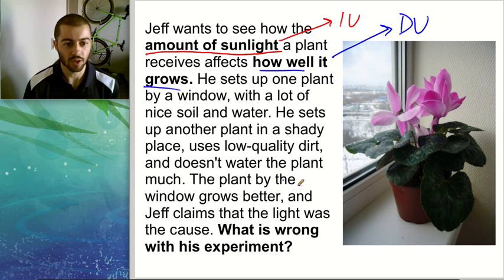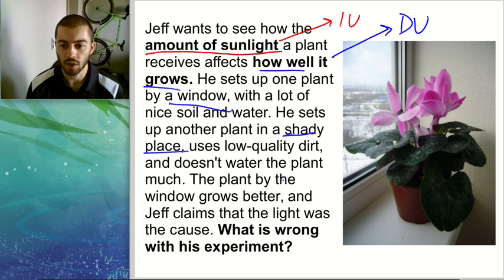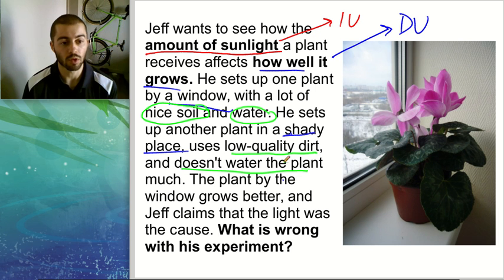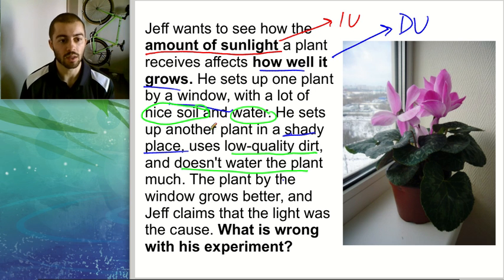What's wrong is that Jeff didn't control all the variables he should have. He changed the amount of sunlight by putting one plant in a shady place and one by a window — that's good, he changed his independent variable. But the problem was he didn't control the other variables: he went from nice soil to not-as-nice soil, and from a lot of water to not much water. The soil and the water should have been kept constant so we could tell if it was really the light that made a difference, or if it was the soil. When designing experiments, the most important thing is to change only one variable at a time and keep the rest constant.